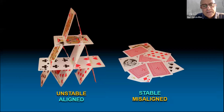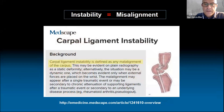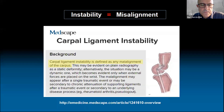This house of cards, for instance, is well aligned and yet is unstable. The paradox is that after collapsing, all cards will become stable again, but misaligned — just the opposite of what we've seen before. Carpal alignment and instability are complementary concepts, but not synonymous. This concept is often forgotten, as seen in a recent publication where instability and malalignment are still said to be equivalent terms — and they are not.